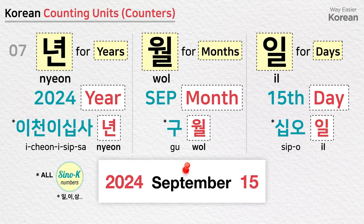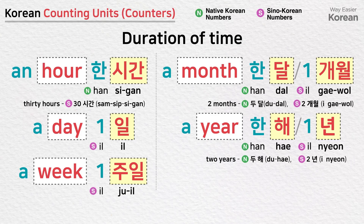When telling the date, we use the counter 연 for years — 2024년. For duration of time: an hour — 1시간; 30 hours — 30시간.